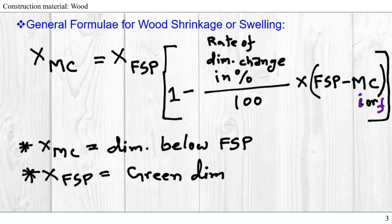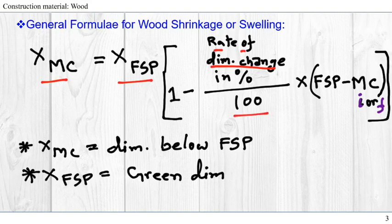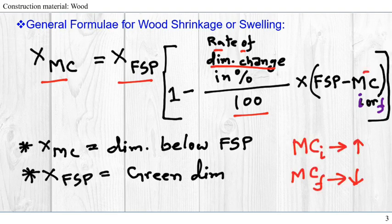XMC equals XFSP multiplied by 1 minus rate of change of dimension in percentage divided by 100, multiplied by FSP minus moisture content initial or final. Where XMC is the dimension below FSP, and XFSP is the green dimension or wet dimension of the wood.